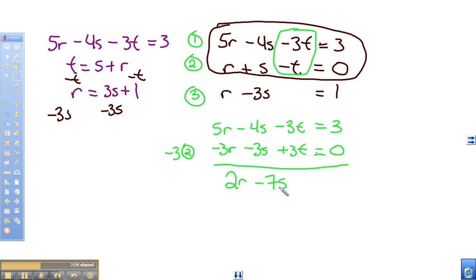I need to get this equation with coefficients that are the same number but opposite signs. And it looks like all I have to do is multiply equation 3 here by negative 2.